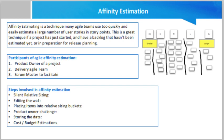Affinity estimation is simply a process of estimation of user stories in agile or scrum methodology. Regarding cost or budget estimation, two basic questions anyone may ask are: where do project cost estimates come from, and how do I get started creating a budget? The budget is the financial presentation of major cost categories specified by the sponsor.